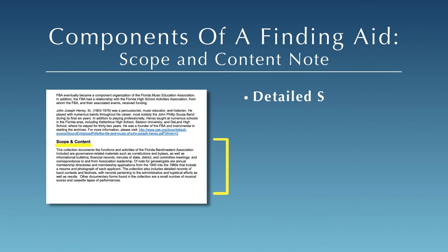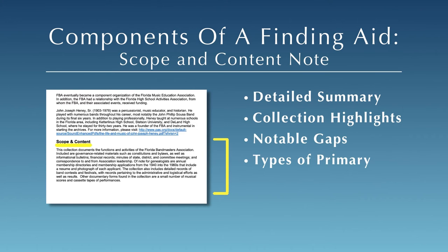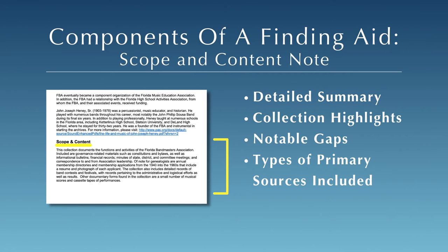The scope and content section of the finding aid contains a lot of useful information that can help you decide if a collection is relevant to your research. Here you'll find a detailed summary of the content of the collection, including subject or topical areas, events, and geographic locations noted in the records. Particular strengths or highlights of the collection, as well as any notable gaps, are discussed here. The scope and content note also lists the types of primary sources held within the collection, for example photographs, correspondence, or meeting minutes.